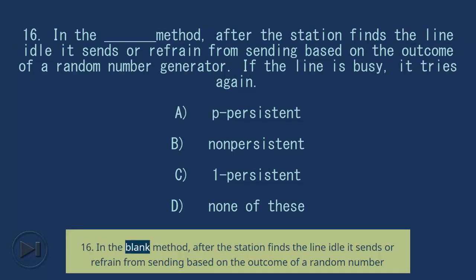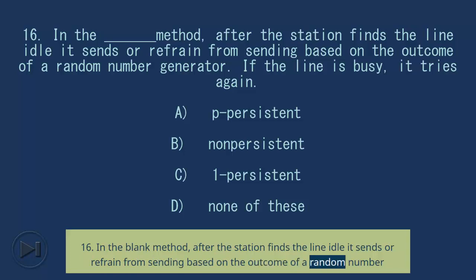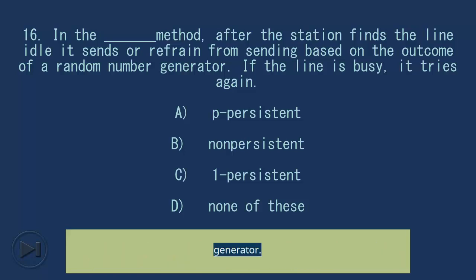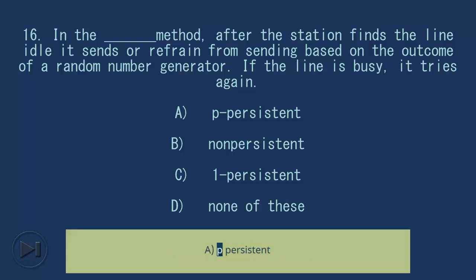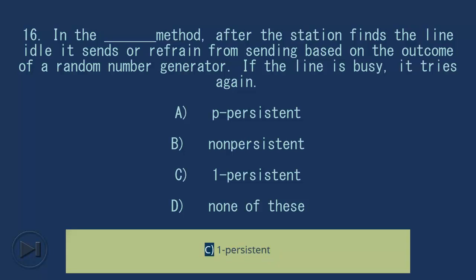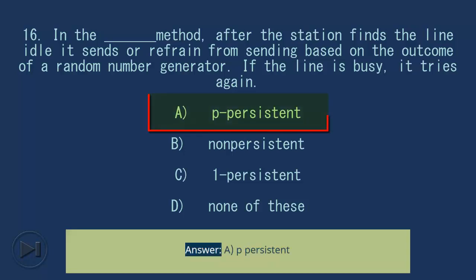Question 16: In the blank method, after the station finds the line idle, it sends or refrains from sending based on the outcome of a random number generator. If the line is busy, it tries again. A) P-persistent, B) Non-persistent, C) One-persistent, D) None of these. Answer: A) P-persistent.